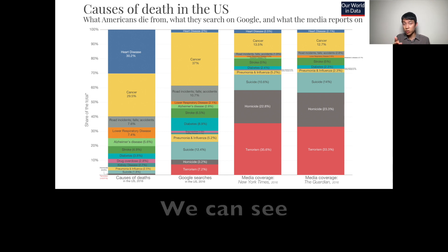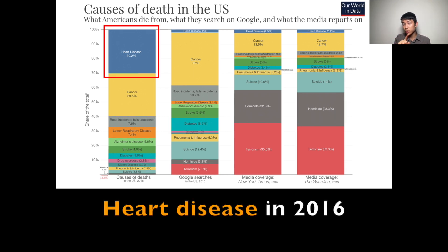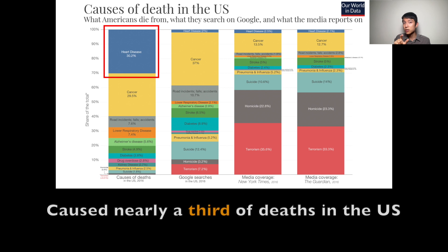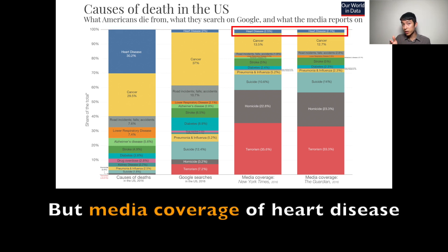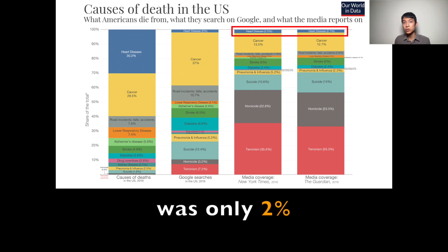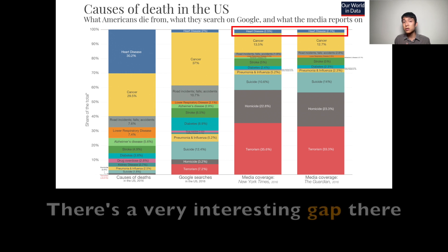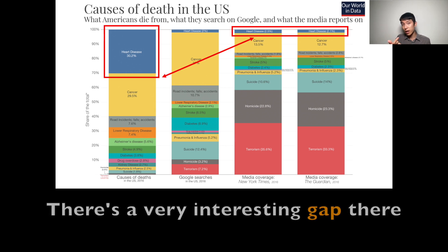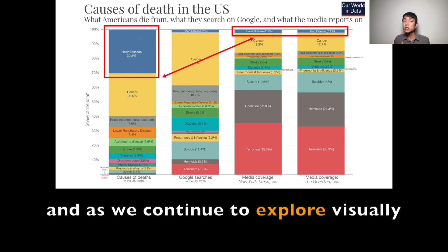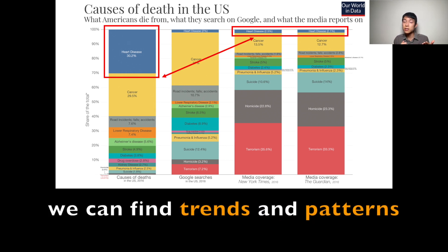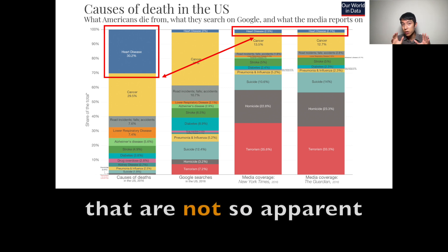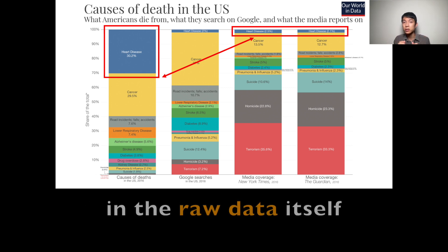This is a starting point to figure out the insights. For example, as we explore, we can see heart disease in 2016 caused nearly a third of deaths in the U.S., but media coverage of heart disease was only 2%. There's a very interesting gap there. As we continue to explore visually, we can find trends and patterns that are not so apparent in the raw data itself.